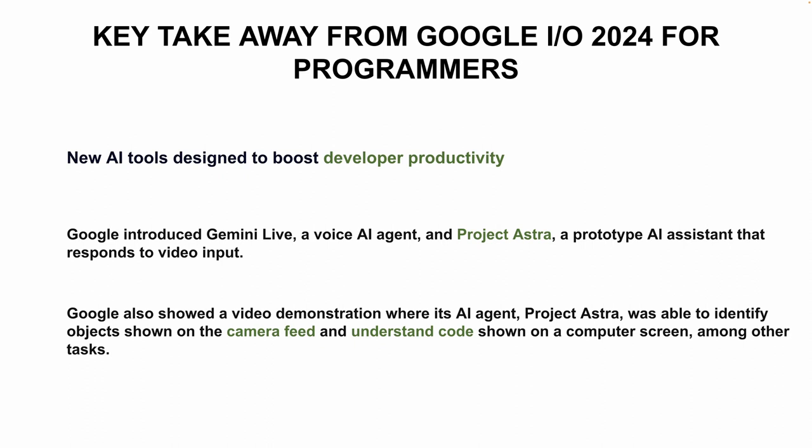First of all, Gemini Live is a voice agent. You can input voice and it will understand and reply. There is also Project Astra, where you can input and process video. For example, a camera feed or an object — you can understand the voice input and get output.